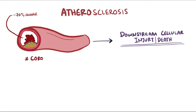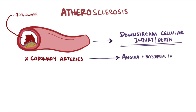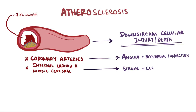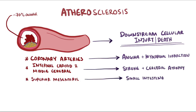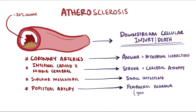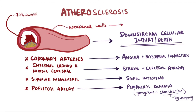If blood flow is reduced in the coronary arteries, angina and myocardial infarctions can occur. Seriously occluded internal carotid and middle cerebral arteries lead to strokes and cerebral atrophy. An occluded superior mesenteric artery affects the small intestine, and an occluded popliteal artery can cause peripheral vascular ischemia like gangrene or claudication — frequent leg cramping during exercise. The buildup of plaque also weakens artery walls, which can lead to aneurysms, explaining why atherosclerosis is a main cause of abdominal aortic aneurysms.